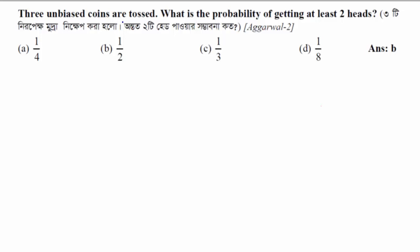Three unbiased coins are tossed. What is the probability of getting at least two heads?